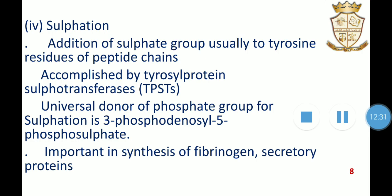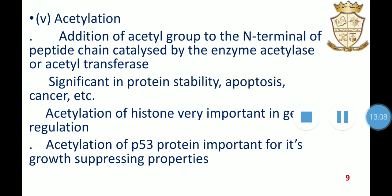Sulfation is the addition of a sulfate group, usually to the tyrosine residues of the polypeptide chain. It is accomplished by tyrosyl protein sulfotransferases (TPSTs), which are membrane-bound enzymes of trans-Golgi bodies. The universal donor of the sulfate group for sulfation is 3-phosphoadenosyl-5-phosphosulfate. This process is important in the synthesis of fibrinogen and secretory proteins. Acetylation is the addition of an acetyl group to the N-terminal of the peptide chain, catalyzed by the enzyme acetylase or acetyltransferase. The acetyl group donor for this reaction is acetyl-coenzyme A. Acetylation is significant in protein stability.